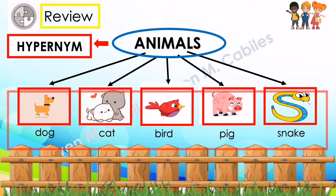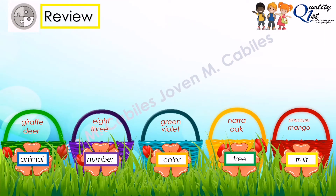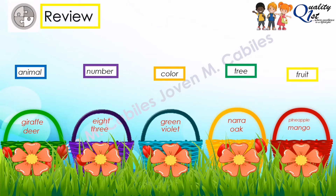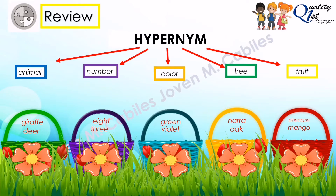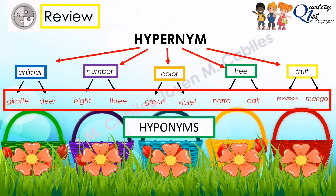the pig, and the snake. They belong to the family of animals, and the word 'animals' is an example of a hypernym. The dog, the cat, the bird, the pig, and snake are called the hyponyms. For another example: the words animal, number, color, tree, and fruit are examples of hypernyms, and the words giraffe, deer, eight, three, green, violet, nara, oak, pineapple, and mango are called the hyponyms.